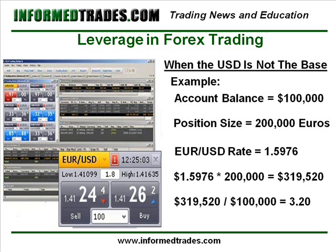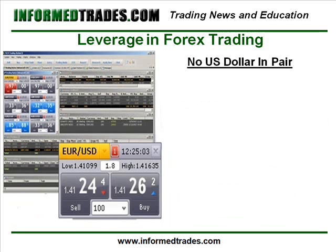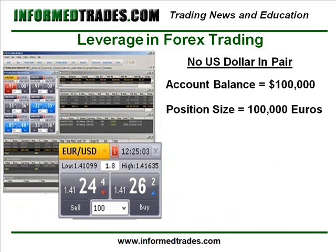The process to calculate the leverage employed for currency pairs which do not include the US dollar is the same, but be sure to use the rate for the base currency and the US dollar to calculate the position size in US dollars. As an example here, if I was trading one contract of EURJPY, then I am trading 100,000 euros against the equivalent amount of Japanese yen. So even though I am trading EURJPY in this example, the position size is still based on the base currency, so it is 100,000 euros.